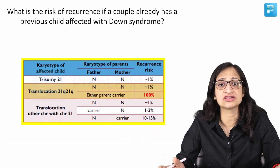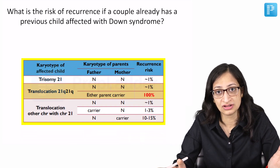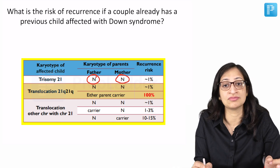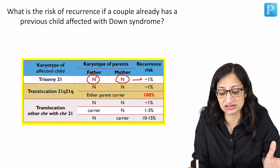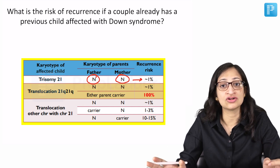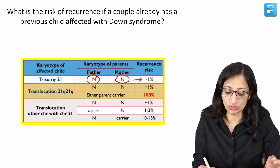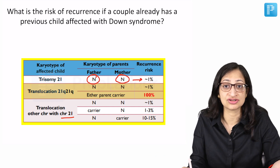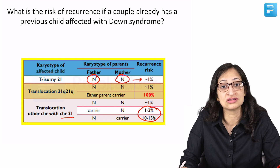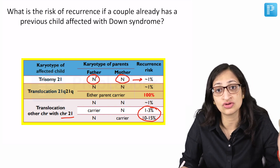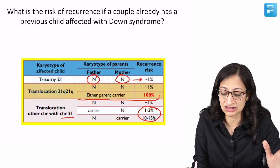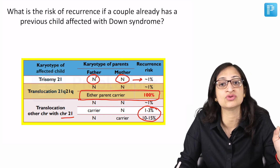What is the risk of recurrence if a couple already has a child with Down syndrome? If the karyotype of both parents is normal, there is no increased risk in the next pregnancy — it is almost the same as in the general population. But if any of the parents is a carrier of a translocation of any chromosome with chromosome 21, there is an increased risk of 10 to 15 percent. And if any parent is a carrier of translocation of chromosome 21 with 21, there is a 100% risk that all babies in the next pregnancy will have Down syndrome.